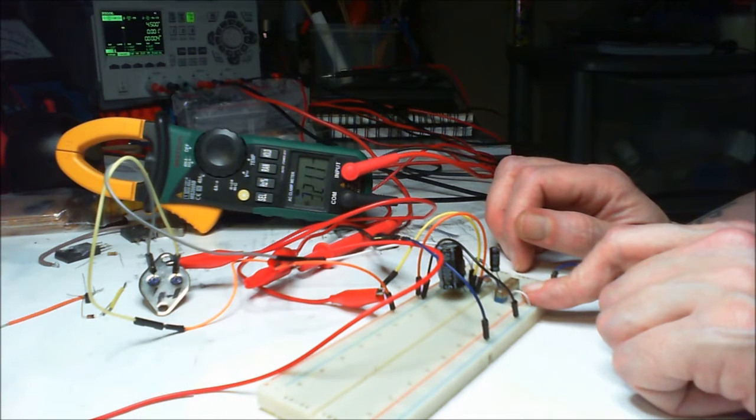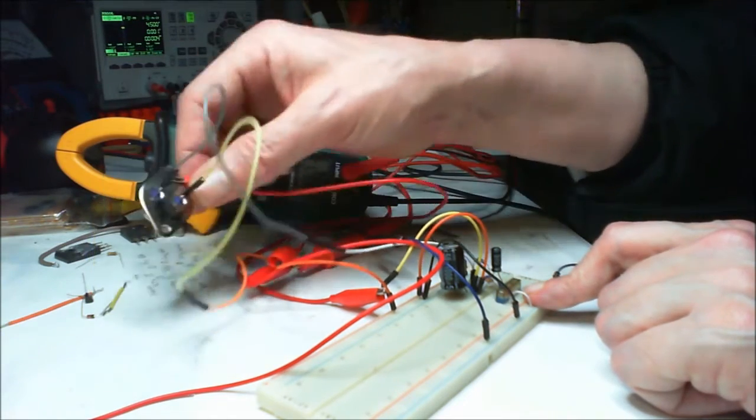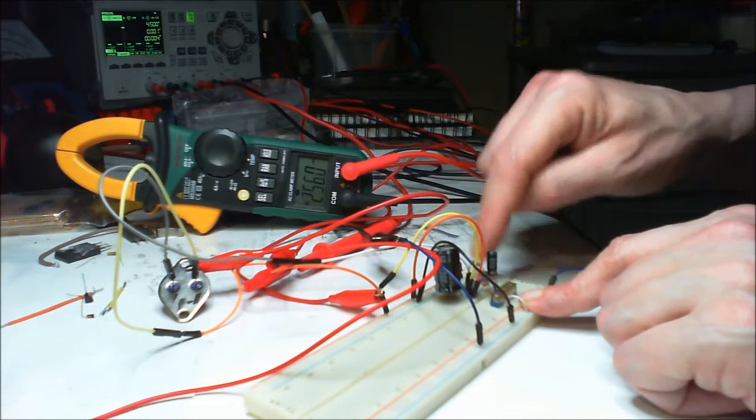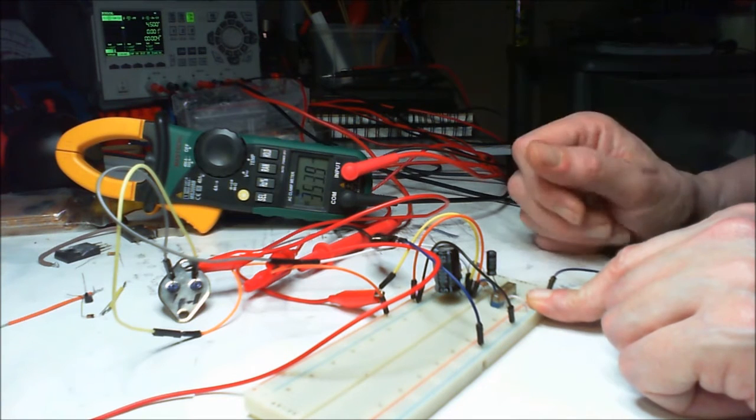They call it a pass transistor, and that can deal with all your amperage. Just got to put a heatsink on it. That's just the setup for a voltage regulator.